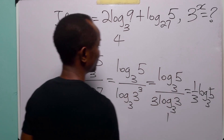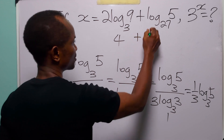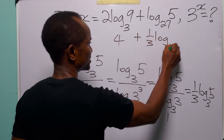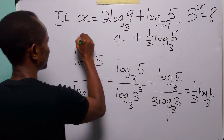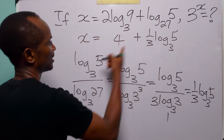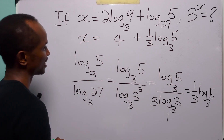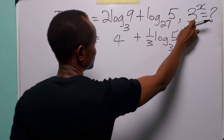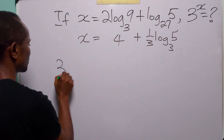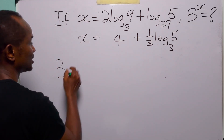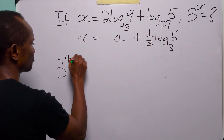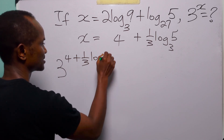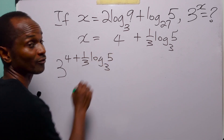So here we have x equals 4 plus one-third times log to base 3 of 5. Therefore, 3 to the power x is equal to 3 to the power of 4 plus one-third times log to base 3 of 5.